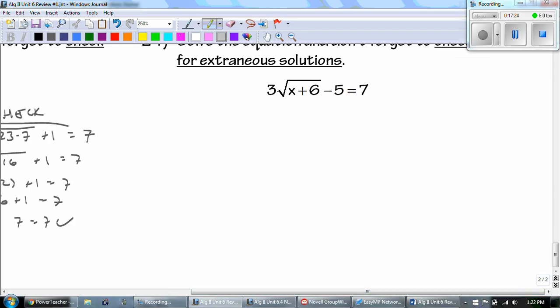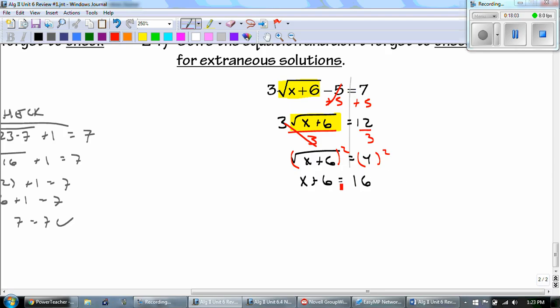Last one. Now, the nice thing about this one is that the square root is already solved for us. So, we just have to do inverse operations. So, we add the 5 to both sides. 7 plus 5 is 12. The root's not by itself. So, I have to divide by 3. And when I divide by 3, we get 4. To get what's underneath the root by itself, I have to square both sides. So, we get x plus 6, and 4 squared is 16. Subtract the 6 to both sides to get that x equals 10.